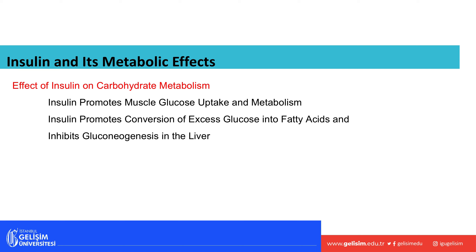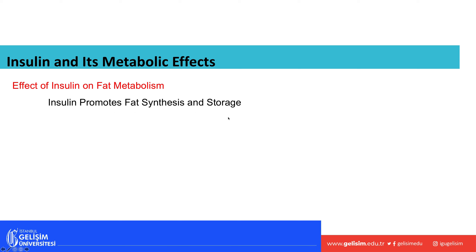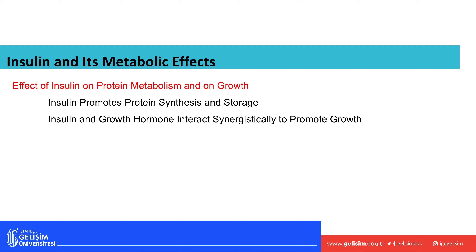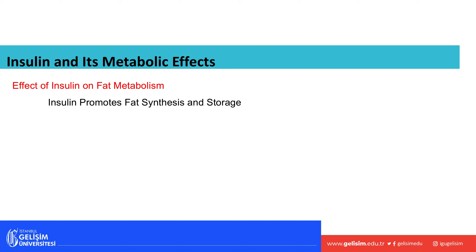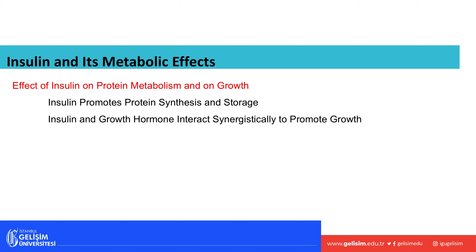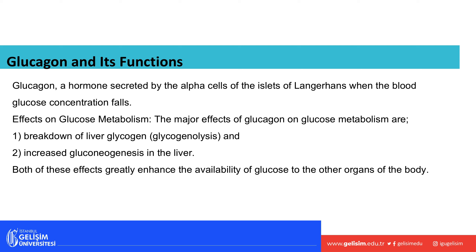Regarding fat metabolism, insulin promotes the synthesis and storage of excessive carbohydrates — when you have too much sugar, insulin converts it into fat and stores it. Insulin also promotes protein synthesis and storage, and together with growth hormone it promotes growth. So insulin is a very important hormone.